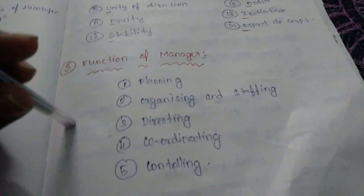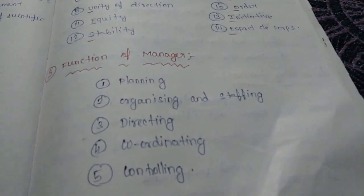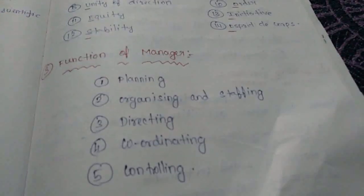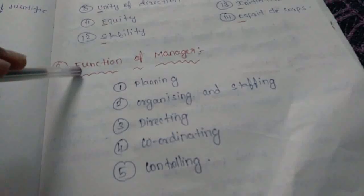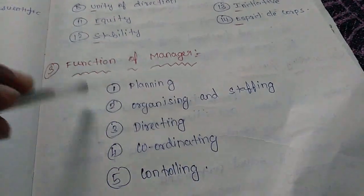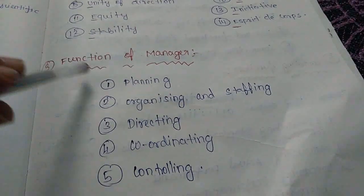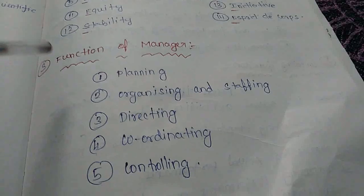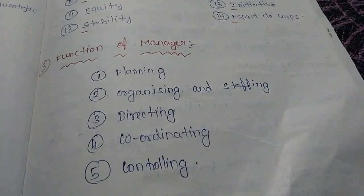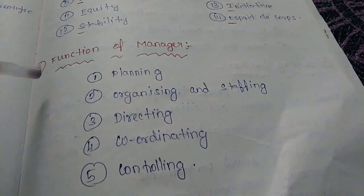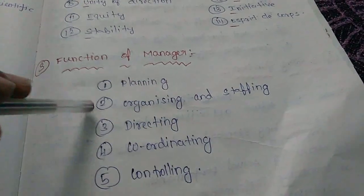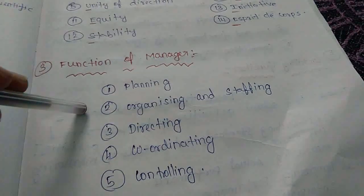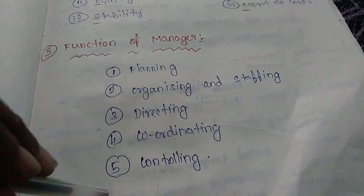Function of Manager — there are 5 functions: 1. Planning, 2. Organizing and Staffing, 3. Directing, 4. Coordinating, 5. Controlling.